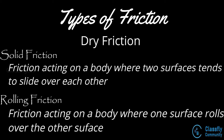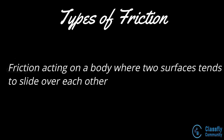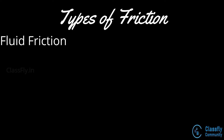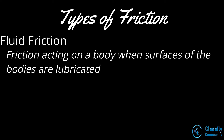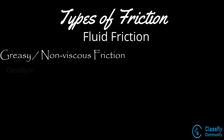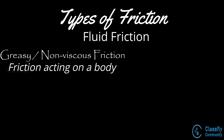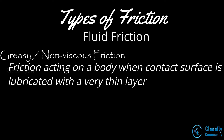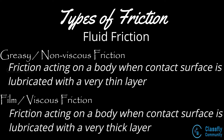Fluid friction: this is the friction acting on a body when the contact surfaces of the two bodies are lubricated. These are further classified into greasy or non-viscous friction — the friction acting when the contact surfaces are lubricated with a very thin layer of lubricant — and viscous or film friction, which is the friction acting when the contact surfaces are completely separated by a lubricant, meaning a large quantity of lubricant is used between the surfaces.